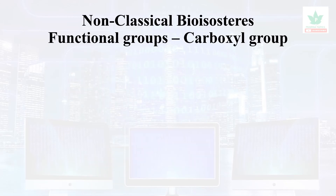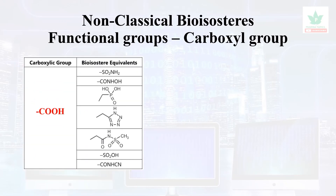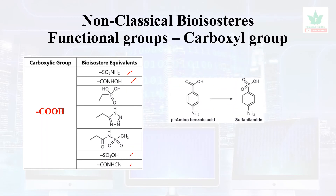For non-classical bioisosteres: the carboxyl group can be interchanged with SO2NH2 or CONHOH. For example, in para-aminobenzoic acid, the COOH group replaced with SO2NH2 gave rise to the more antibacterial compound sulfanilamide.